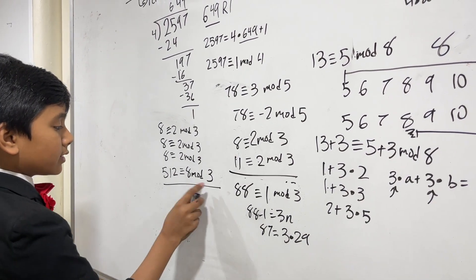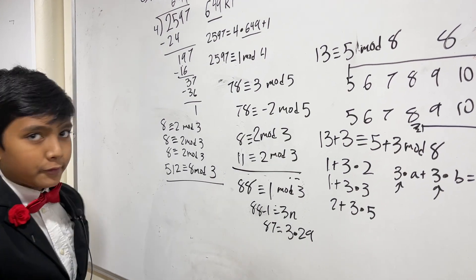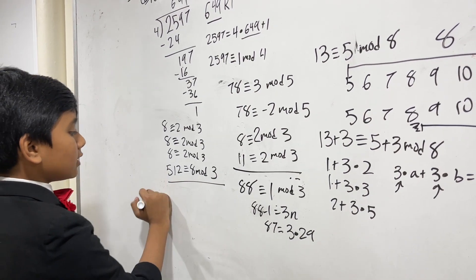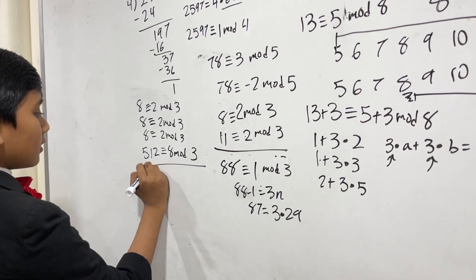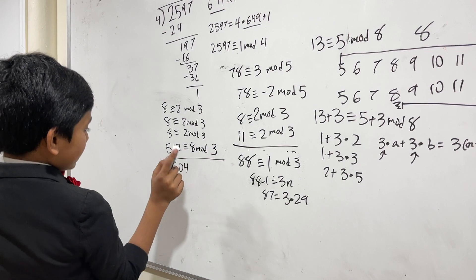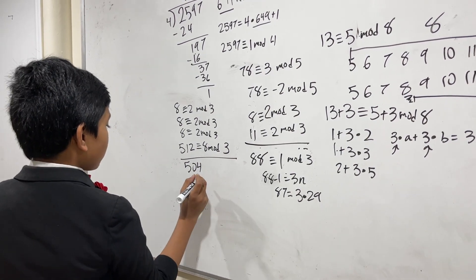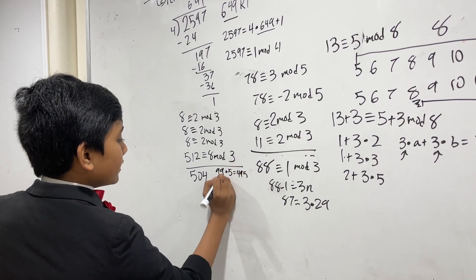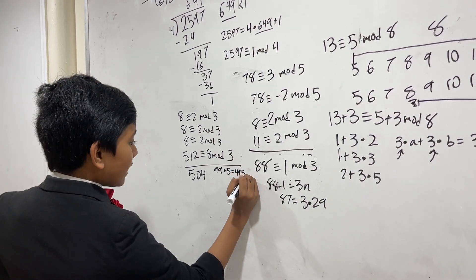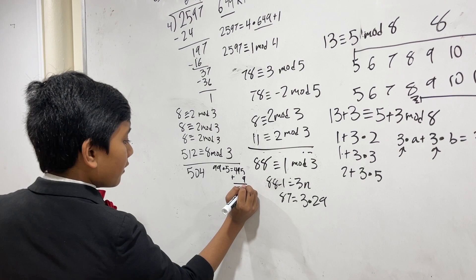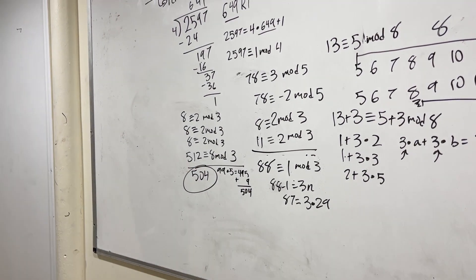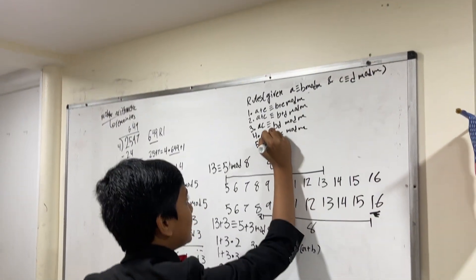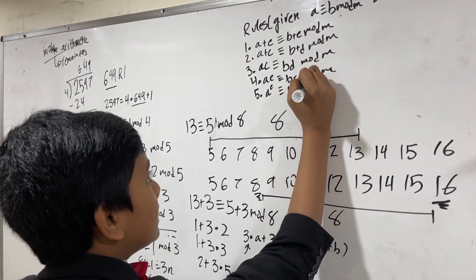So, five-twelve is still congruent to eight mod three. Want proof? Well, five-twelve minus eight is five hundred four. How do we divide that by three? Well, ninety-nine times five is four hundred ninety-five, and ninety-nine is a multiple of three. If we add nine here, which is also a multiple of three, we get five hundred four. So it is confirmed that five hundred four is a multiple of three — this works! That means a to the e is congruent to b to the e mod m.